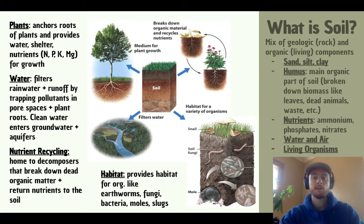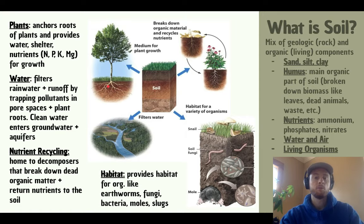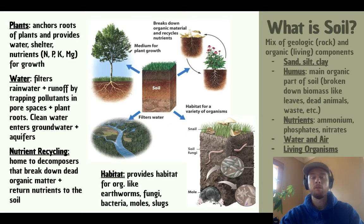Now we'll talk about four really important roles that soil plays in ecosystems. The first is that it supports plant growth — it serves as an anchor for plant roots and provides them with the water and nutrients they need, like nitrogen, potassium, phosphorus, and magnesium. Soil is also a really important water filtration system. When runoff or rain percolates through soil, the pore spaces trap pollutants so that clean water can pass through and recharge groundwater sources and aquifers. Then we have nutrient recycling — decomposers in the soil break down dead organic matter and return those vital nutrients to the soil.